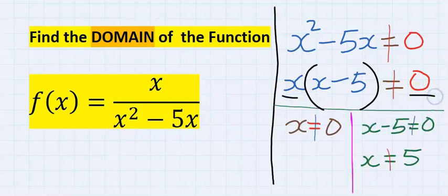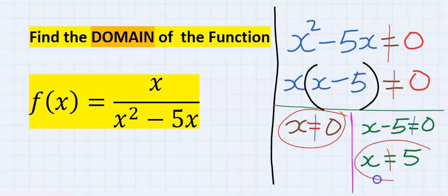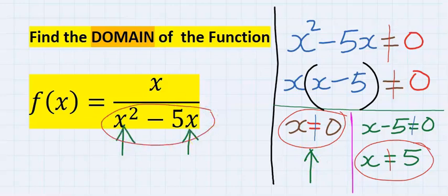Solving for x not equal to zero, we obtain this solution, and solving for x minus 5 not equal to 0, we equally obtain this solution. Whenever x is equal to zero, this equation will cease to exist.